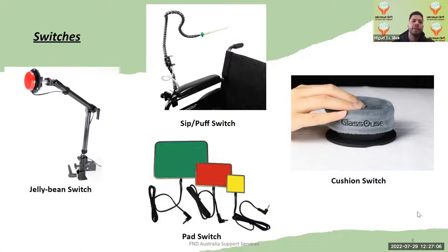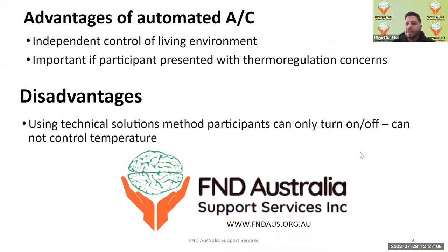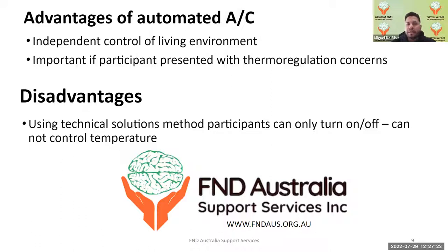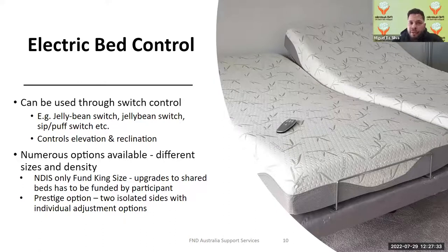The advantages of automated AC control include independent control of your living environment, which is important for participants with thermal regulation concerns. The disadvantage is only the on/off system is available — you can't change the temperature yourself.